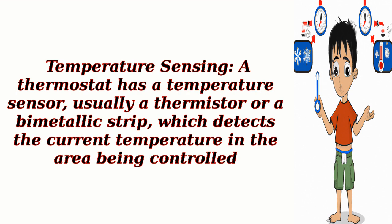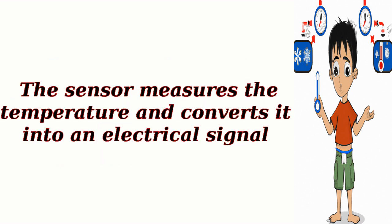Temperature Sensing: A thermostat has a temperature sensor, usually a thermistor or a bimetallic strip, which detects the current temperature in the area being controlled. The sensor measures the temperature and converts it into an electrical signal.